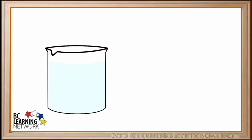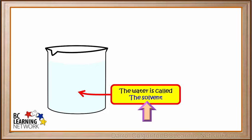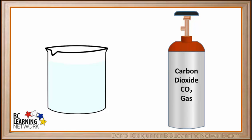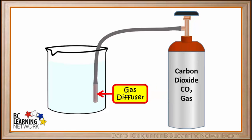For our next type of solution, we'll start with the beaker of water. The water will be the ingredient that we have more of this time, so it is called the solvent in this case. Now we'll take a tank of compressed carbon dioxide gas, or CO2. The carbon dioxide will be the solute in this case. We attach a hose and a gas diffuser to the tank. A gas diffuser has tiny holes in it that allow small bubbles of gas to enter the liquid.